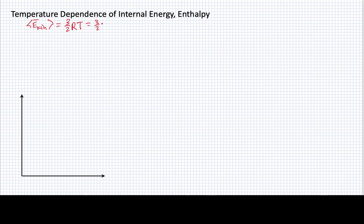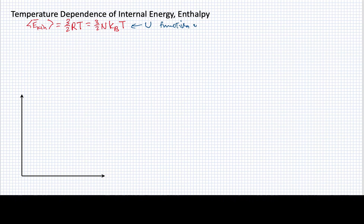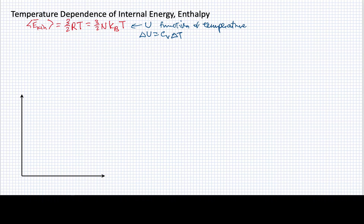We could also write this as 3/2 times the number of particles times k_b, the Boltzmann constant, times the temperature. However we wish to write it, the essence here is that this energy is a function of the temperature. We're going to relate this energy to the internal energy, so it is in fact a function of temperature. The fact that we can take any sort of change process and, as long as the temperature changes, write that ΔU is equal to C_v times ΔT, is also an indication that for an ideal gas, the internal energy is solely a function of the temperature.